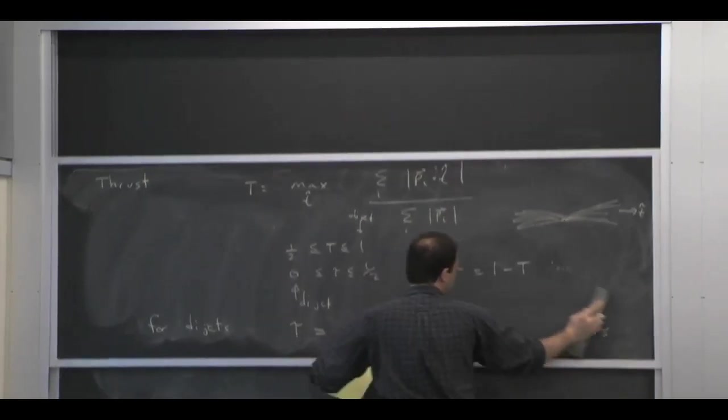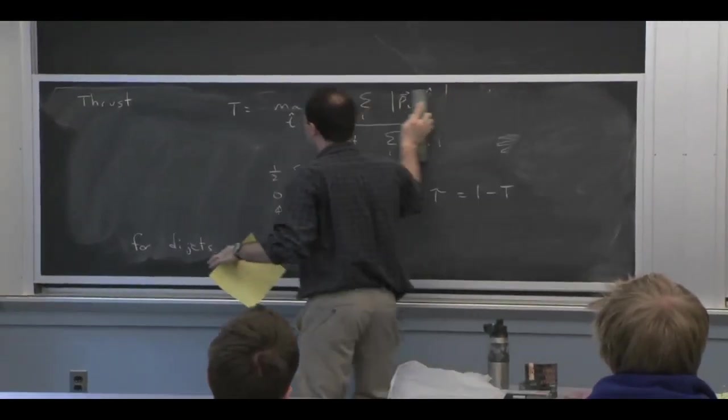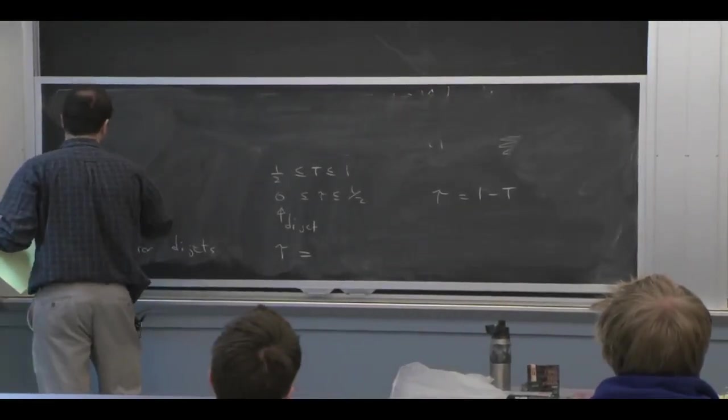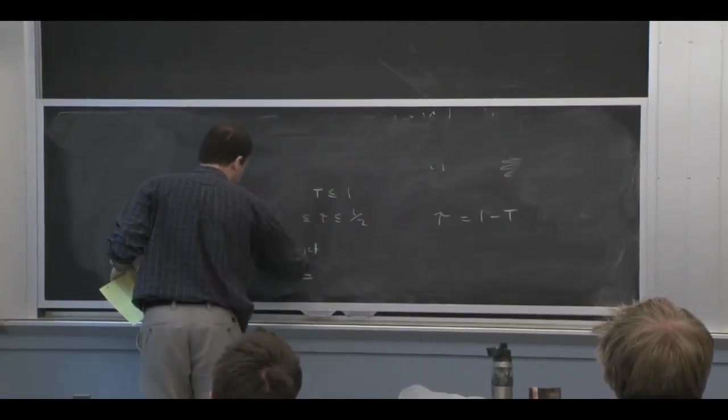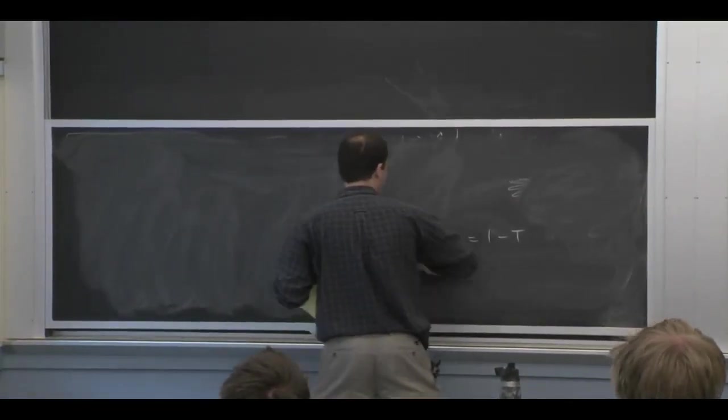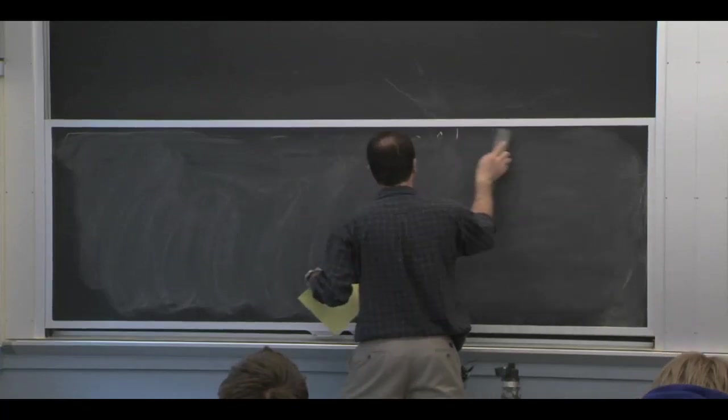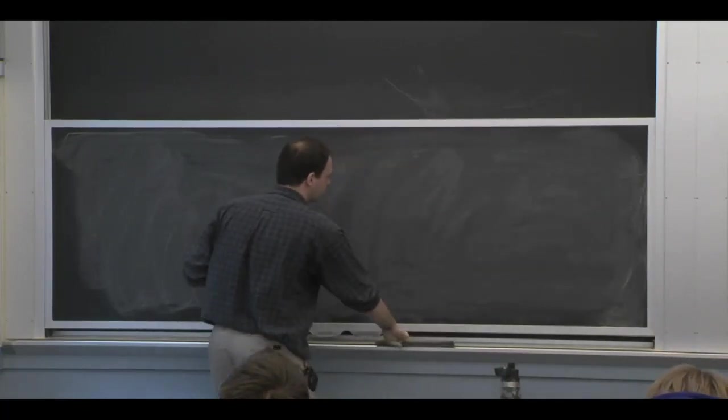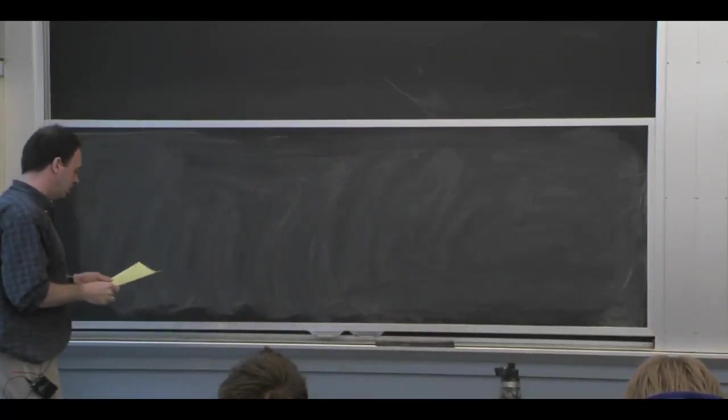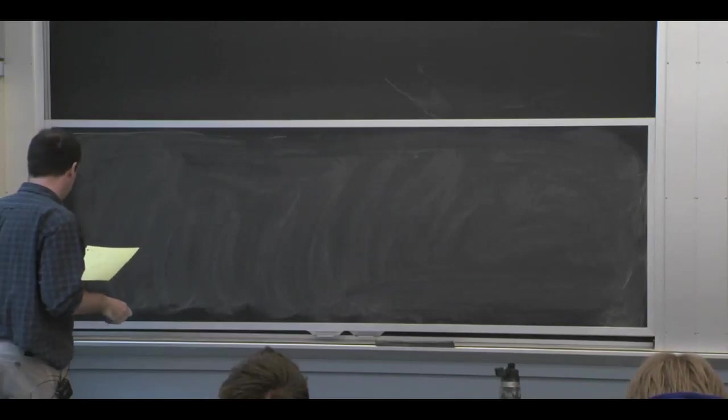And it's actually, in some ways, a combination of the two examples that we treated. We did an example where we had a Wilson coefficient that was just running multiplicatively, and we did another example where we had a function for deep inelastic scattering that had an integral. We're going to have both of those situations in this case.